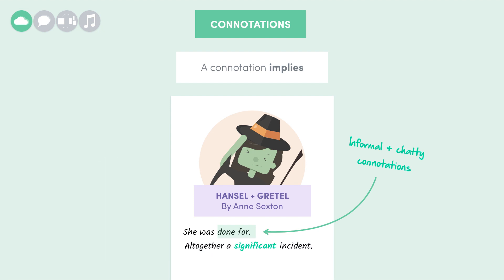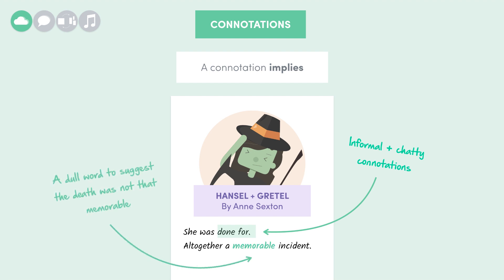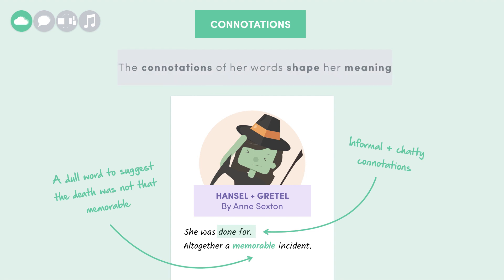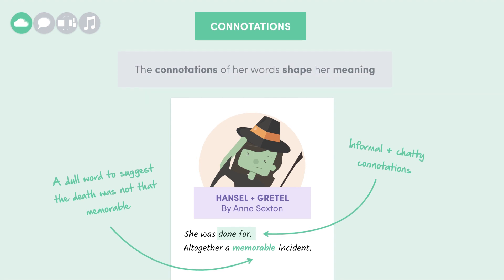If Sexton had used words like unforgettable, significant, or momentous, then the connotations would seem way more epic. But Sexton clearly chooses a rather dull word — memorable — to suggest the death is actually not that memorable. In other words, the connotations of her words shape her meaning.